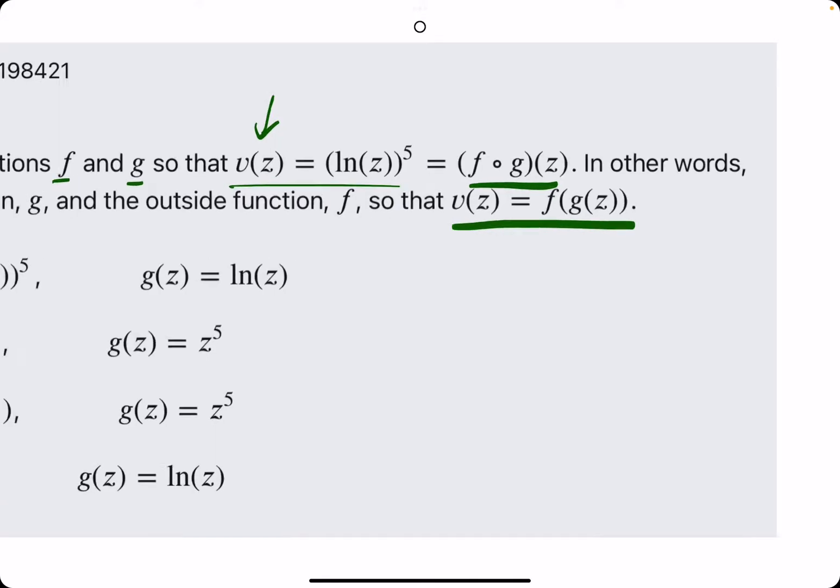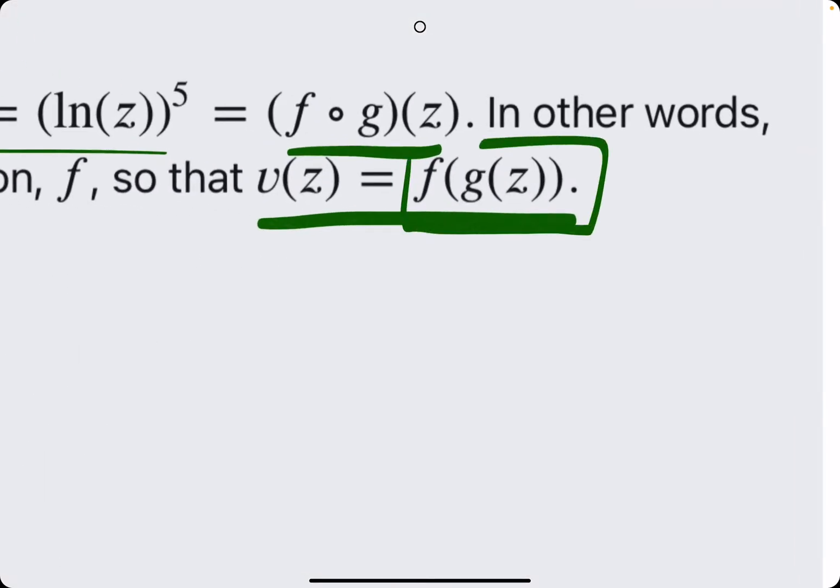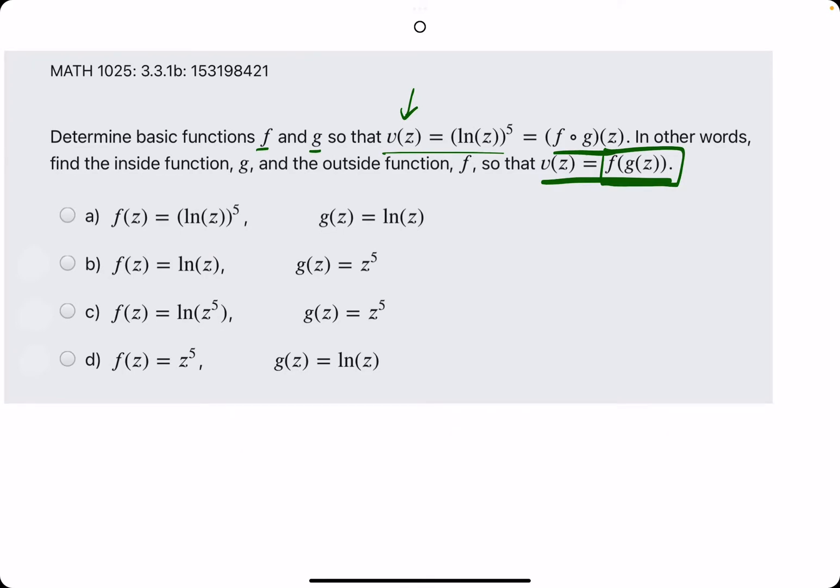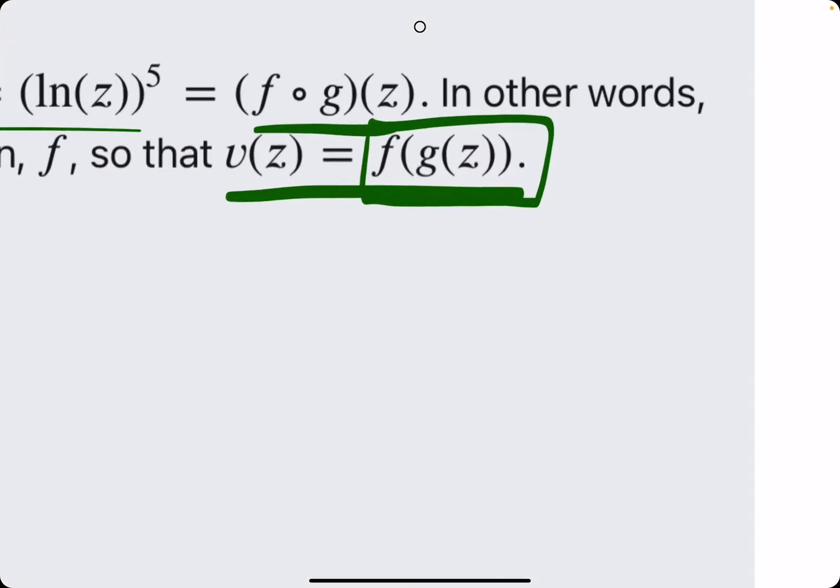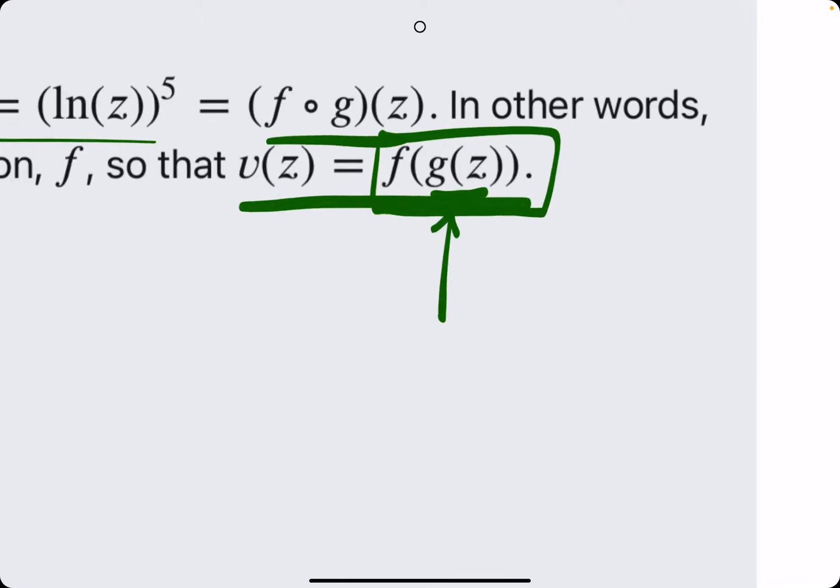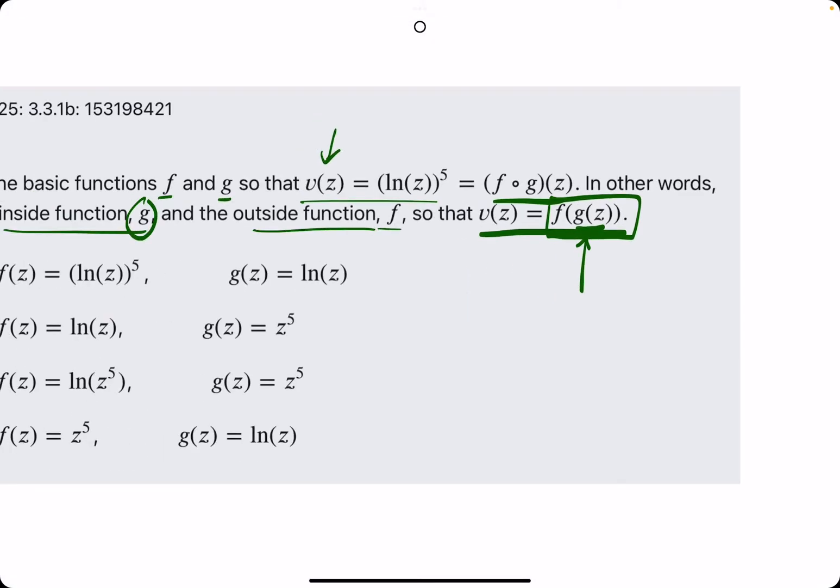In other words, they have it down here how I prefer, f of g of z. So we are looking for f and g, where they actually tell us find the inside function g, so g is our inside function since it's inside the f parentheses, and then the outside function is f.